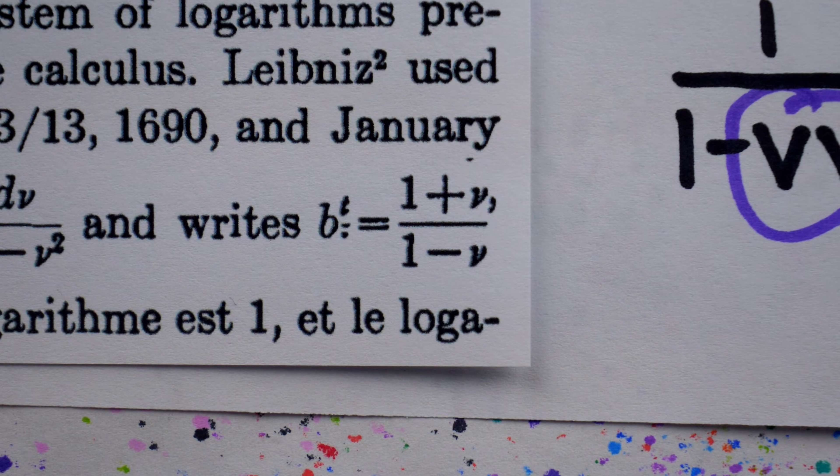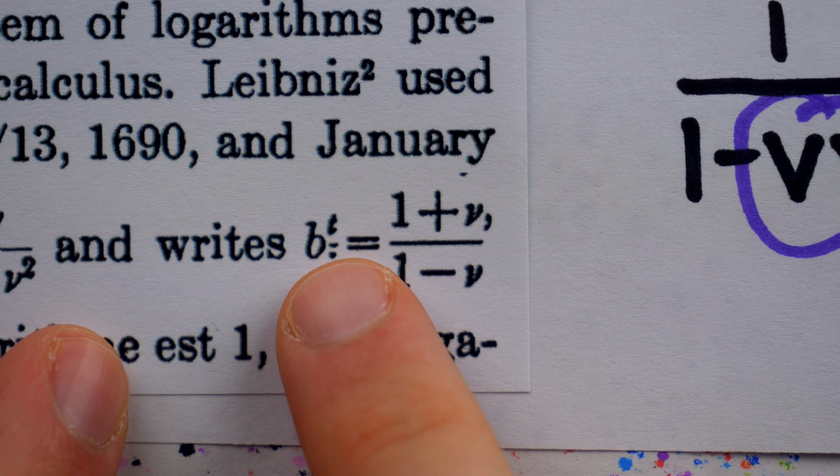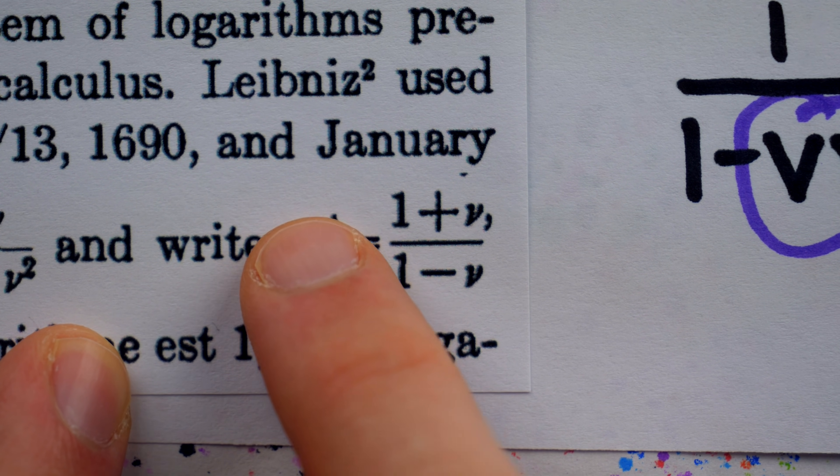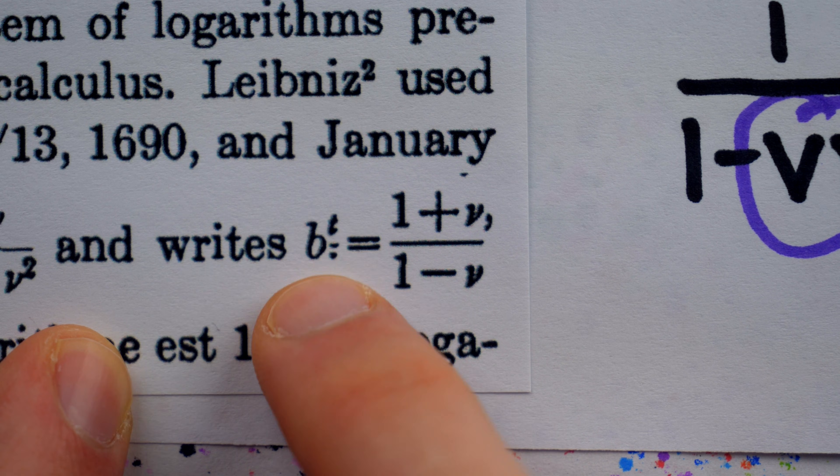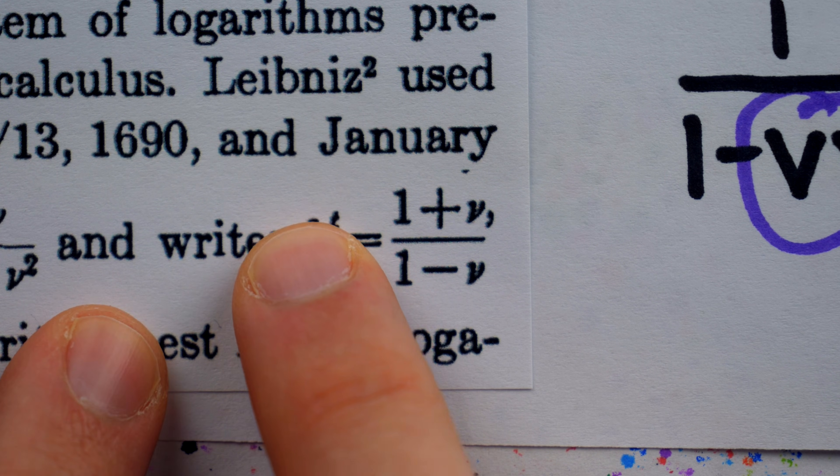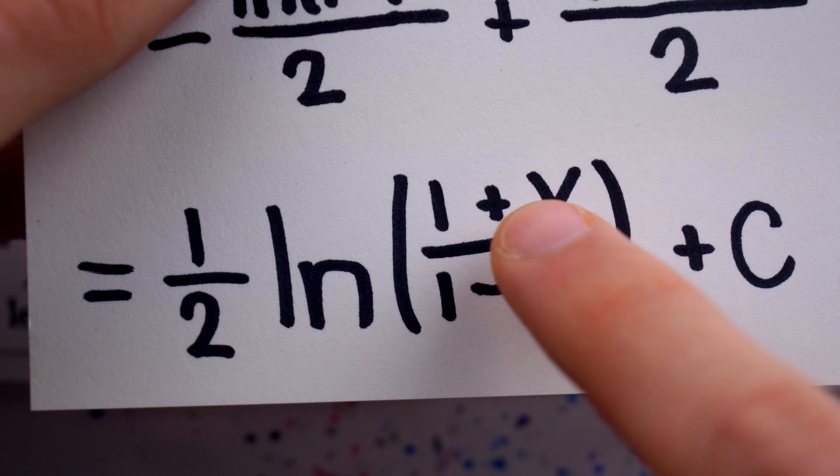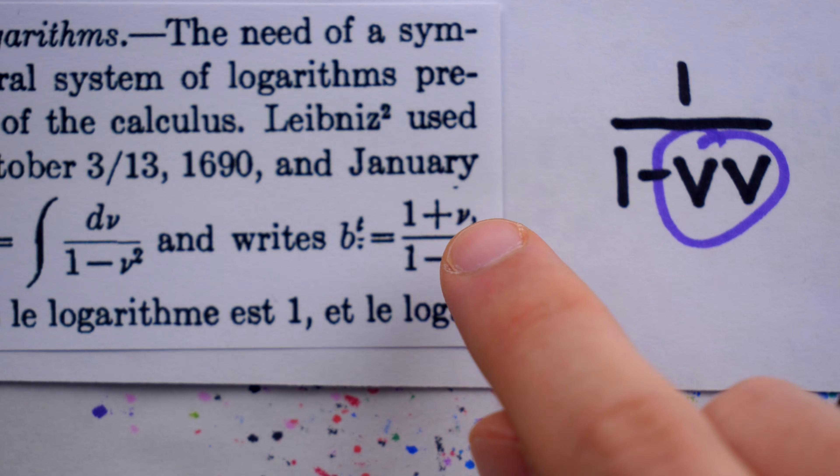Leibniz goes on to write that b to the power of t, with some weird extra notational stuff going on here, which I can't find any explanations for. The original letter is in German, so it's not all comprehensible to me. But regardless, he writes this, b to the t equals the argument of the logarithm, which we saw in the integral. The argument of the logarithm right there.